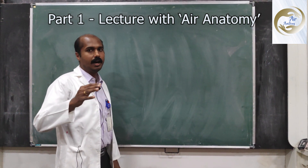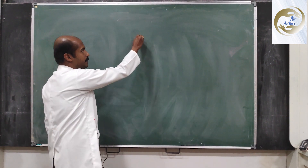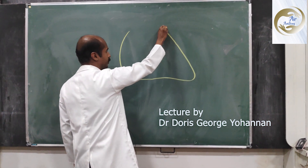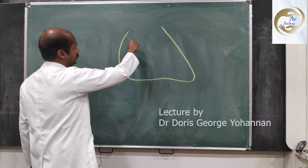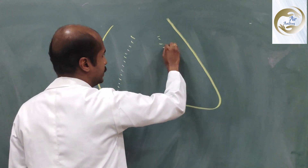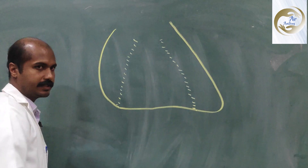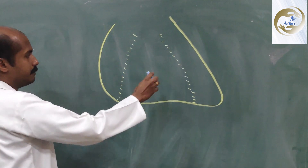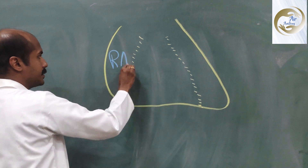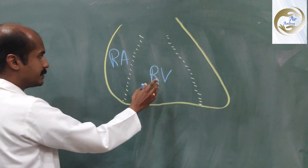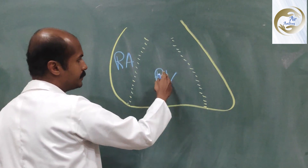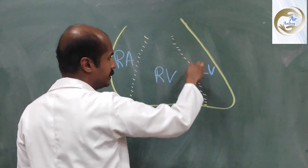Now we're going to learn how the heart is located in situ. This is the right border of the heart, this is the inferior border of the heart, and this is the left border of the heart. This is the apex of the heart. Here you have the atrioventricular groove and this is the interventricular groove — the anterior interventricular groove. These two grooves separate the three chambers that are predominantly seen when you look at the anterior view of the heart in situ. This is the right atrium, this is the right ventricle, separated by the atrioventricular groove. The right ventricle is separated from the left ventricle by the anterior interventricular groove.